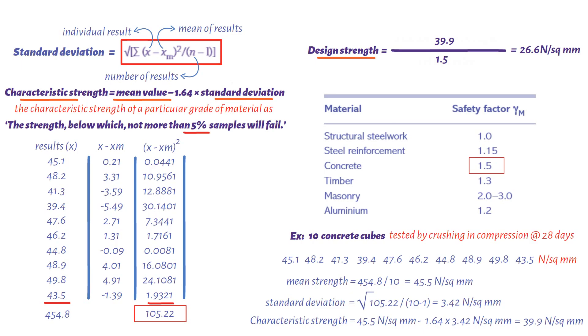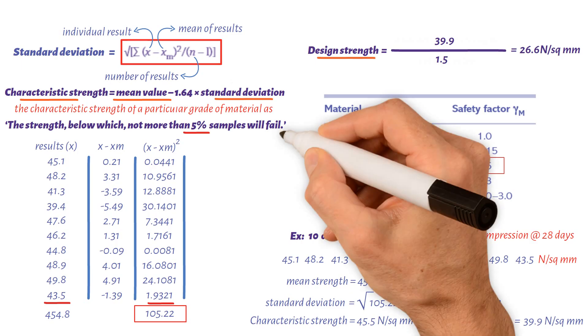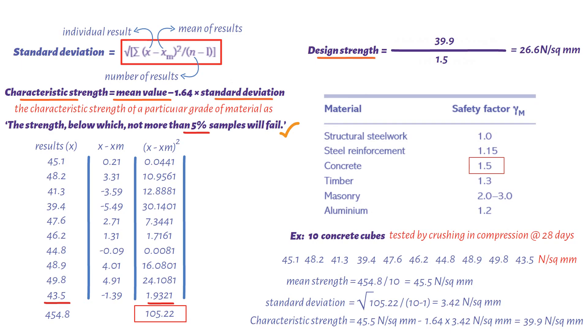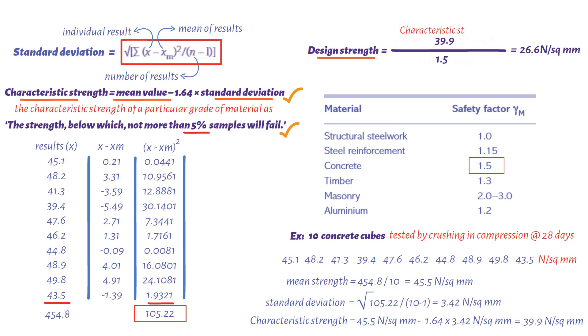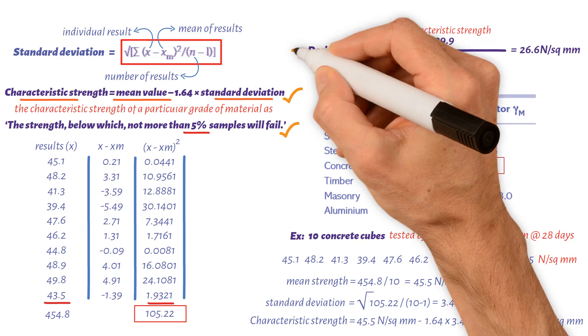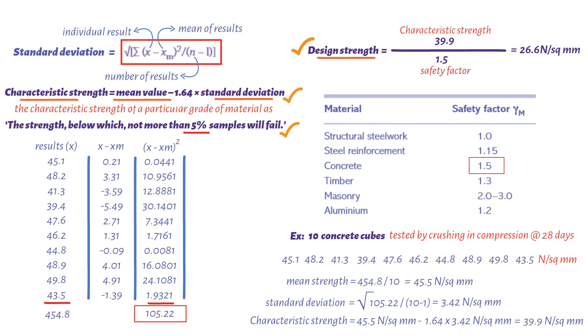To recap. In limit state design, the characteristic strength is defined as that strength below which not more than 5% of tested samples will fail. For a series of test specimens, characteristic strength equals mean value minus 1.64 times standard deviation. The characteristic strength must then be divided by a partial safety factor for material strength before it becomes a design strength for use in structural calculations.